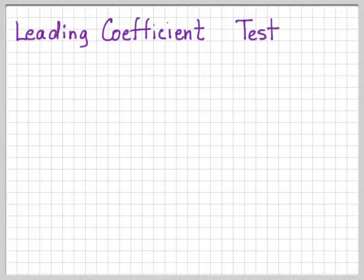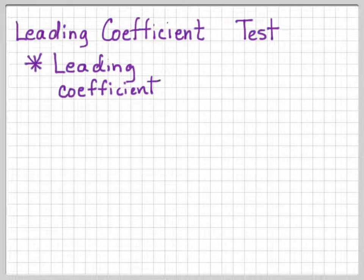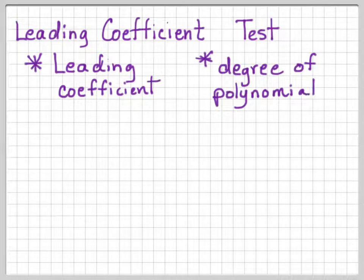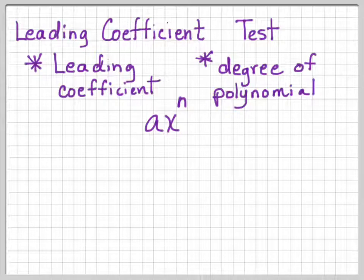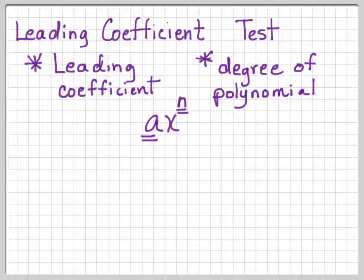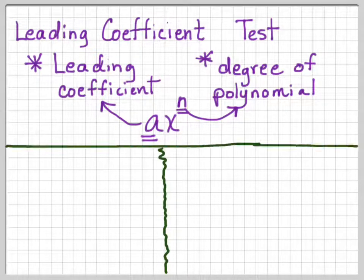Leading coefficient test. The leading coefficient and the degree of the polynomial are the two things we look at to determine what the end behavior looks like. For example, in 4x cubed plus 3x squared minus 2x minus 6, we look at the leading coefficient — the first coefficient — which is associated with the highest degree. Here 'a' is the leading coefficient and 'n' is the degree. Let's build a chart to determine whether both ends are up, both ends are down, or one is up and one is down.